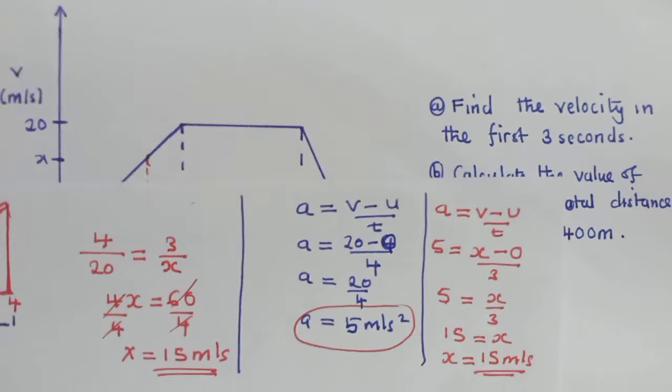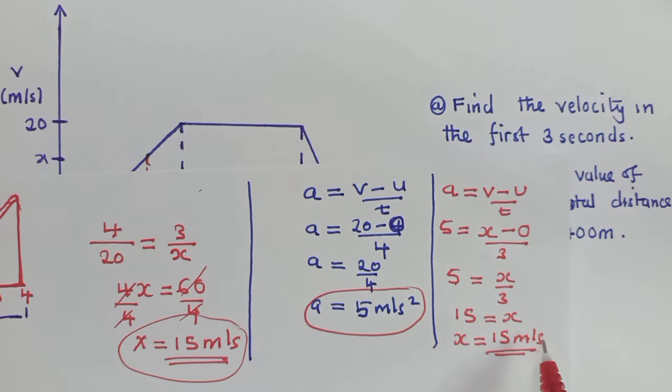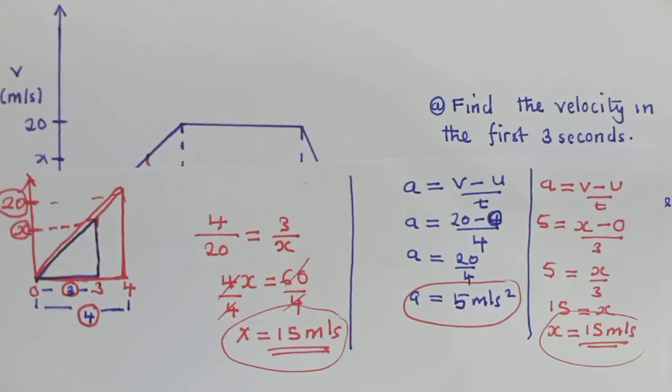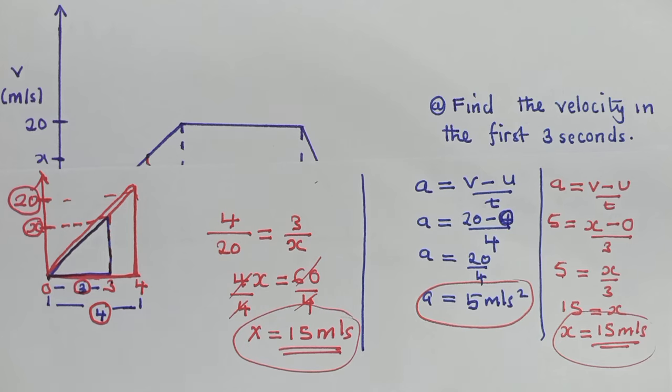So you see, we are getting the same solution using different methods. Here we got 15, here 15. So you just pick whichever you think will be easier working with.